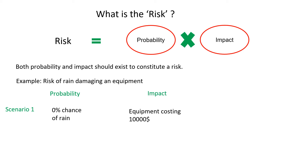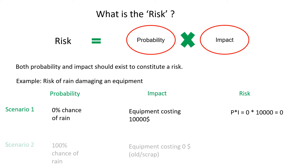In scenario one, there is a 0% chance of rain as probability, whereas the impact is equipment costing $10,000. As there cannot be any rain, there is no chance of equipment being damaged, so the risk is zero. In another scenario, there is a 100% chance of rain but the equipment costs zero dollars — maybe scrap items — so here again the risk will be nil.